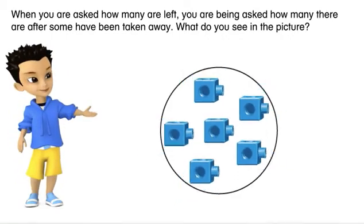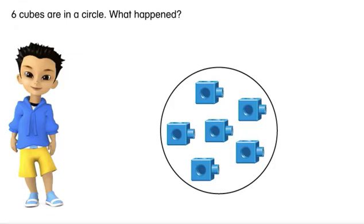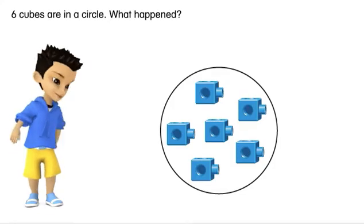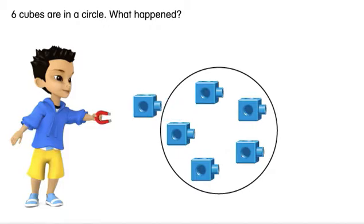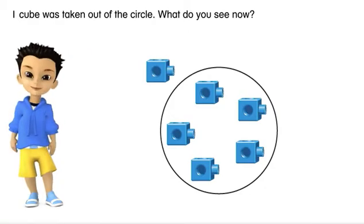What do you see in the picture? Six cubes are in a circle. What happened? One cube was taken out of the circle.